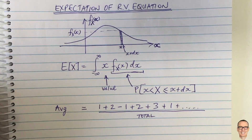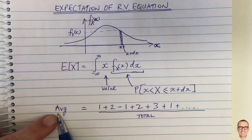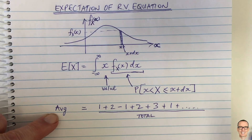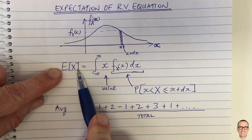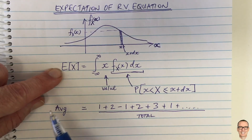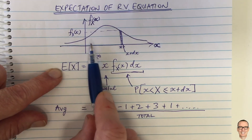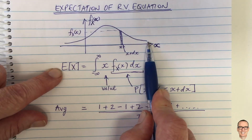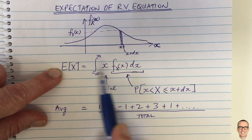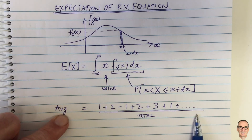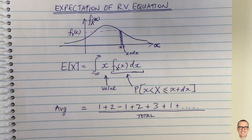This is the difference between the time average — which is mostly what we mean when we say average — and the expectation. Sometimes the expectation is called the ensemble average, because you're integrating over every possible value of x: the ensemble of possible values. This is how the time average relates to the expectation.